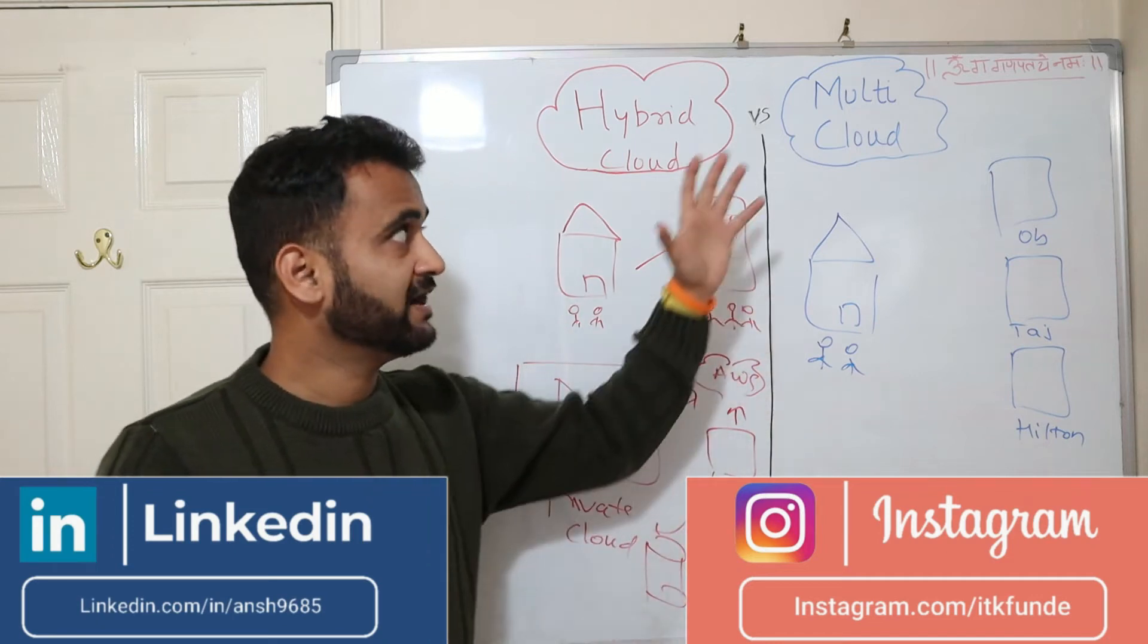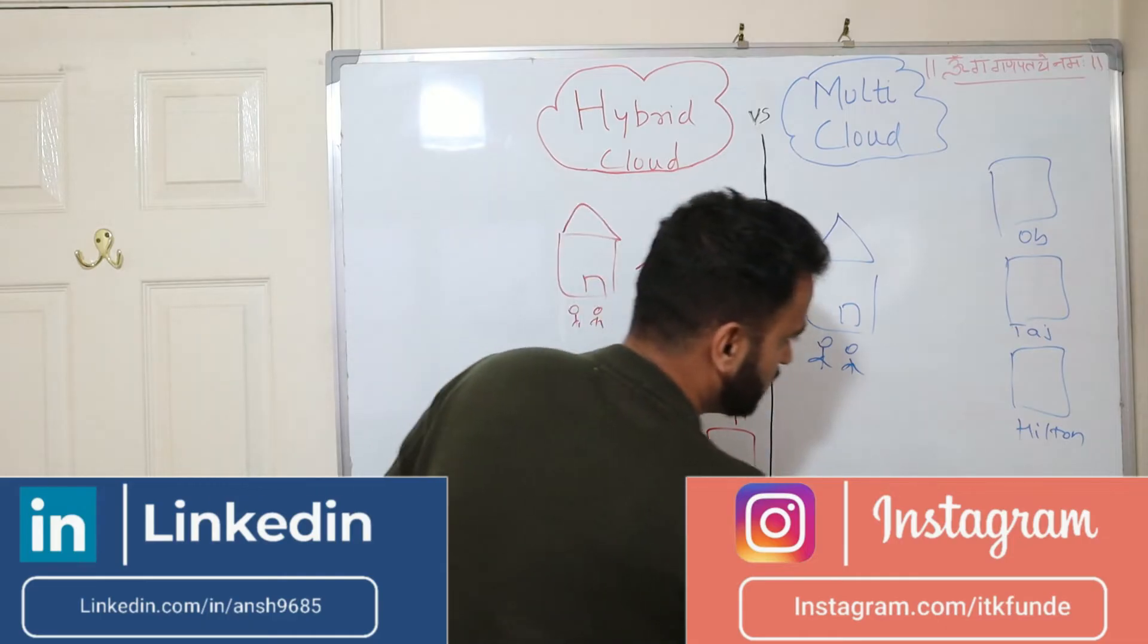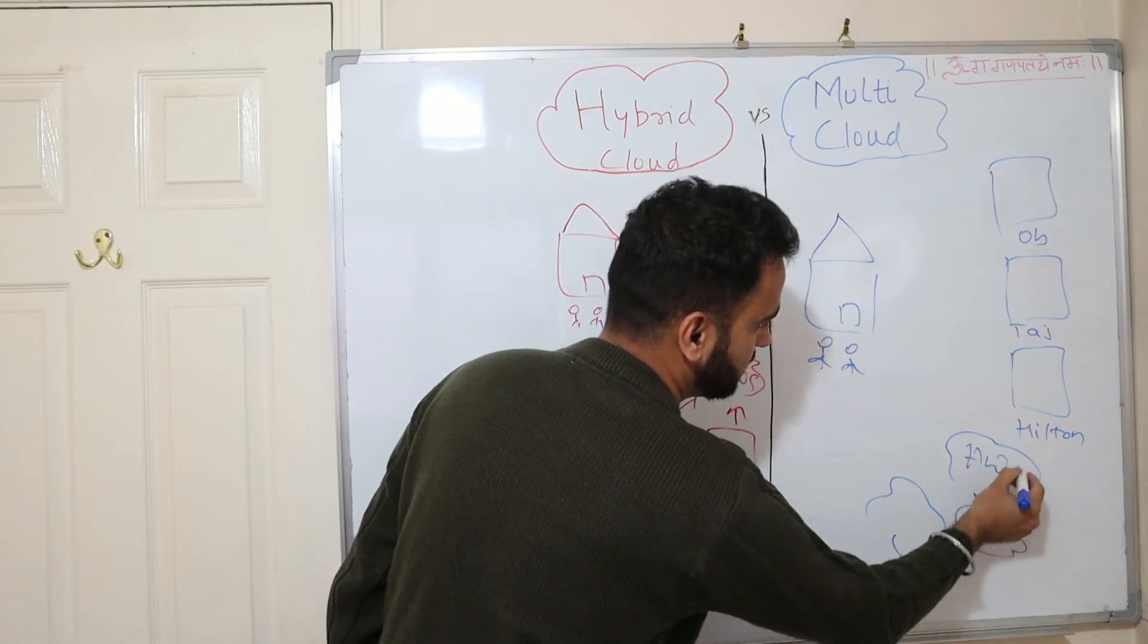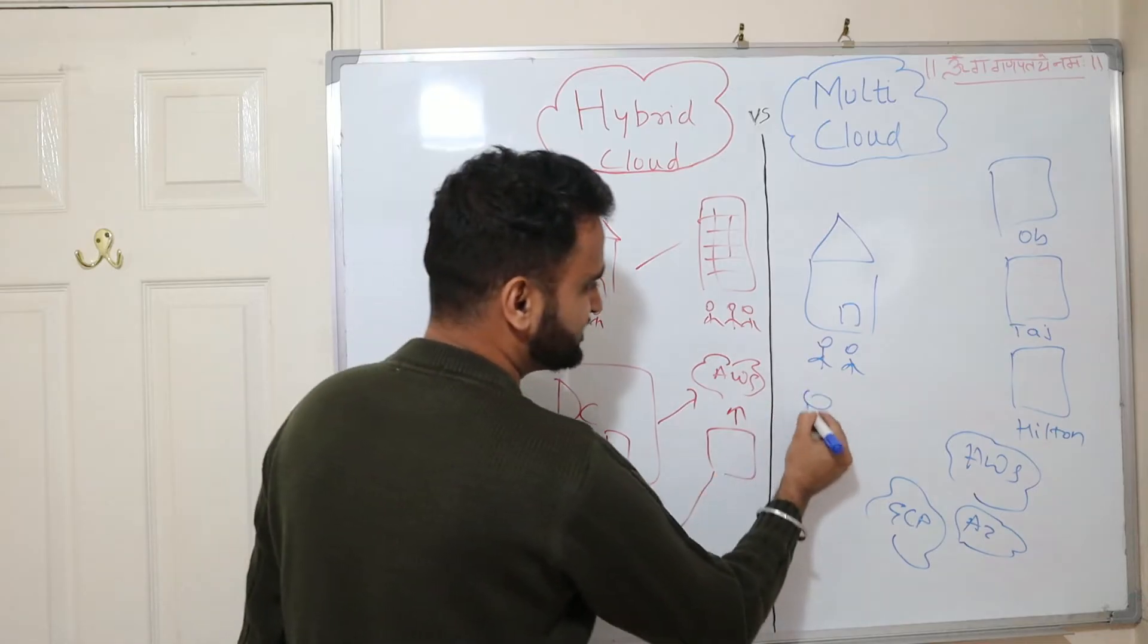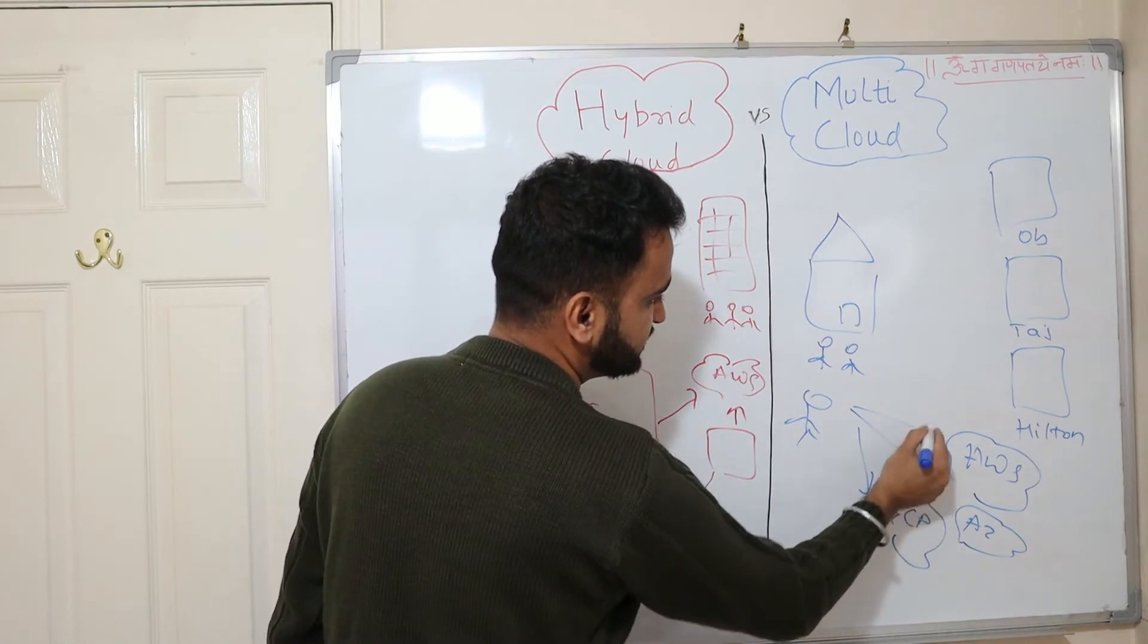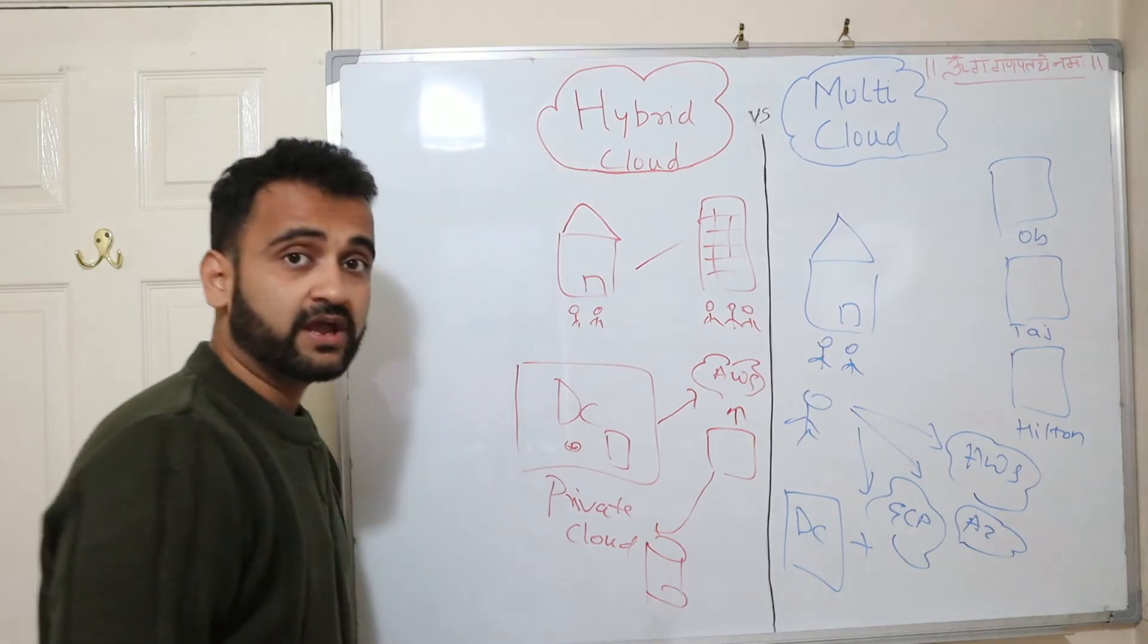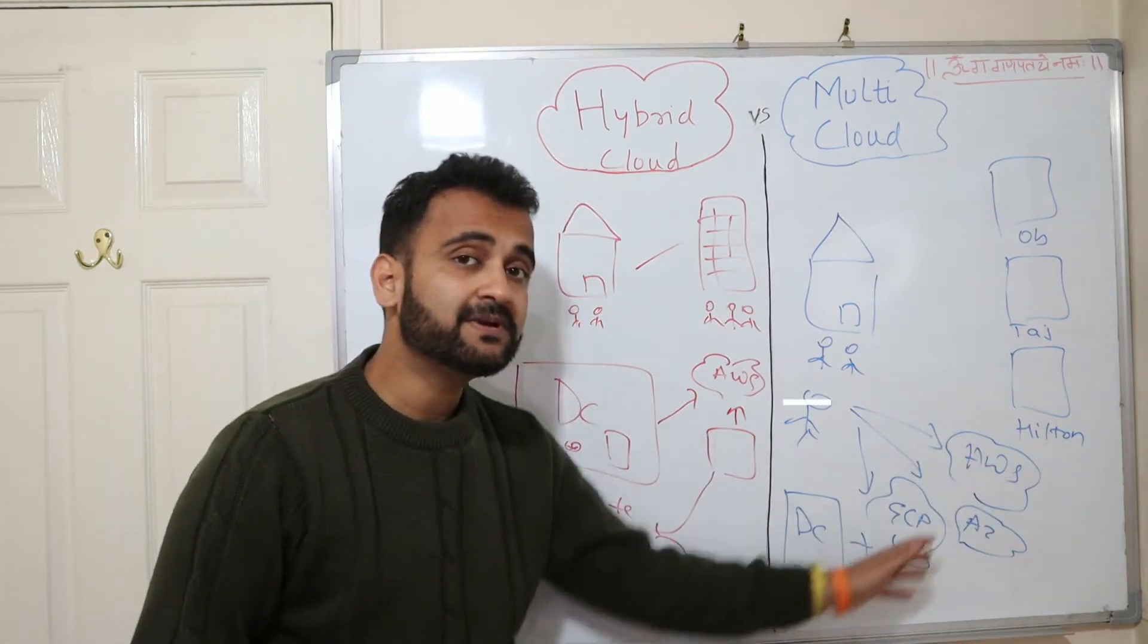Just replicate this scenario and understand that this is what multi-cloud is as well. So in multi-cloud, you have multiple cloud providers helping you manage your IT. You will have your AWS, you will have your Azure, you will have your GCP, and as a customer, you want to use services from these. And at the same time, you can still host something in your private data center as well. So this is multi-cloud—using multiple cloud providers. And that's the difference between hybrid and multi.